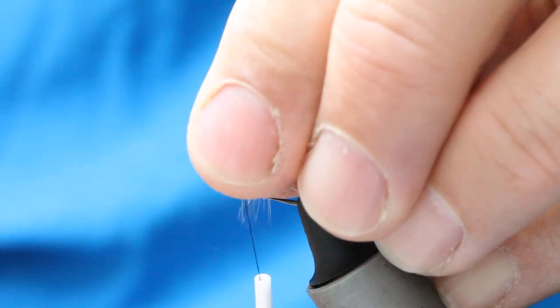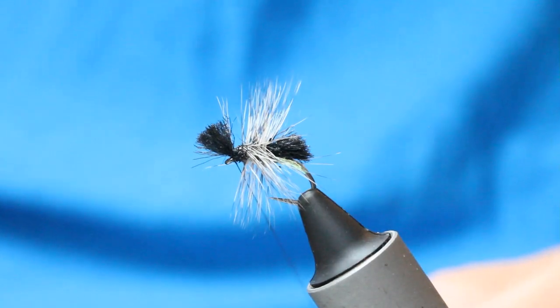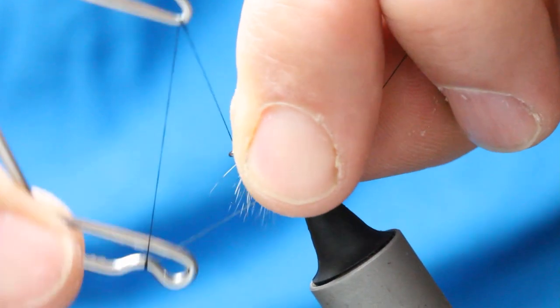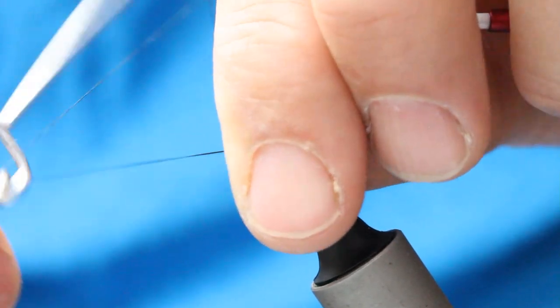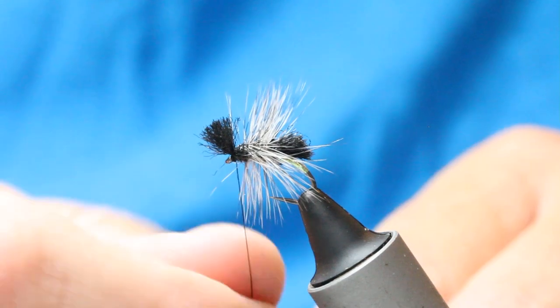So pull everything back with your thumb and four fingers there, and with your whip finish, make sure you're not going to trap any fibers. Like so.